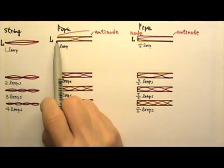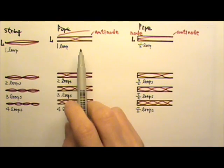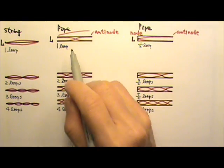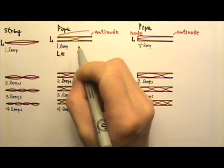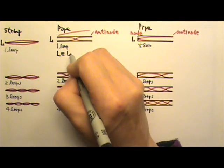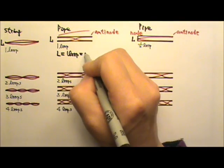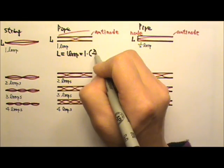If I want to relate the length of the pipe, L, to the fundamental frequency, I can start with in this length, L, there is one loop. And one loop is always half a wavelength.